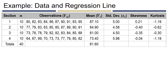Looking at the data, we have ten observations from each of four sections. Section 1 averaged the highest at 87.1, while section 4 scored the lowest on average at 73.4. The table also contains sample standard deviations for each group, along with skewness and kurtosis values to help assess normality.